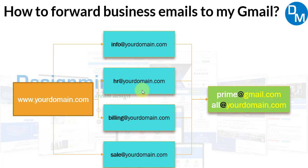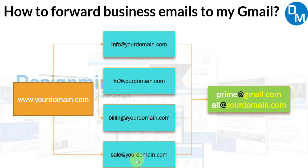we have an option called forward email setting in the domain. What this option does is: all emails from info, hr, billing, and sales — whenever you receive an email at any of these addresses — it will automatically be forwarded to your primary email account. That primary email account can be your Gmail account, or you can create one primary email account under your company name like all@yourdomain.com. So if someone sends an email to info, hr, billing, or sales@yourdomain.com, it will automatically be forwarded to your Gmail or primary domain email account.